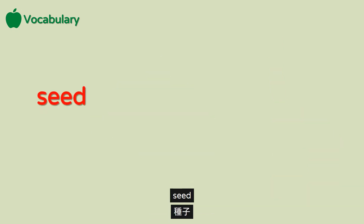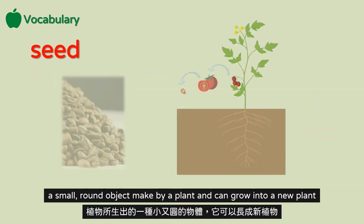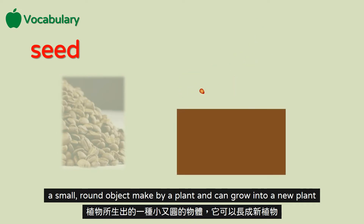Seed: a small, round object, made by a plant, and can grow into a new plant.